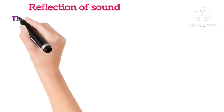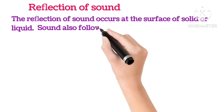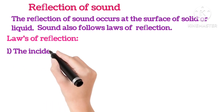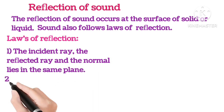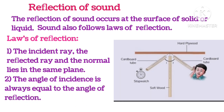Reflection of sound: The reflection of sound occurs at the surface of a solid or liquid. Sound also follows the laws of reflection. The laws of reflection are: the incident ray, the reflected ray and the normal all lie in the same plane; and the angle of incidence is always equal to the angle of reflection. We can prove this with an experiment: take two identical pipes and arrange them on a table near a wall. Keep a clock at one open end of a pipe and try to hear the sound through the other pipe. Adjust the pipes until you hear the best sound, then measure the angle of incidence and reflection.